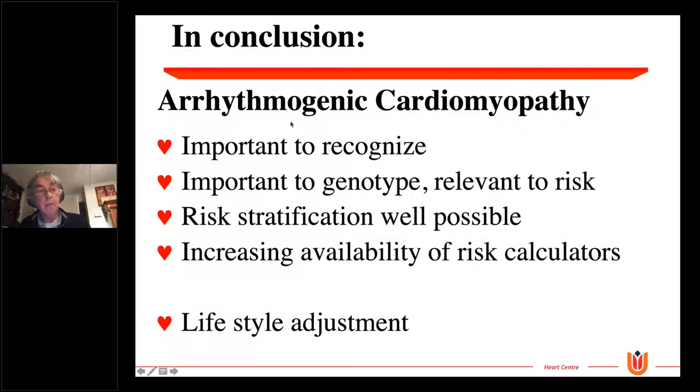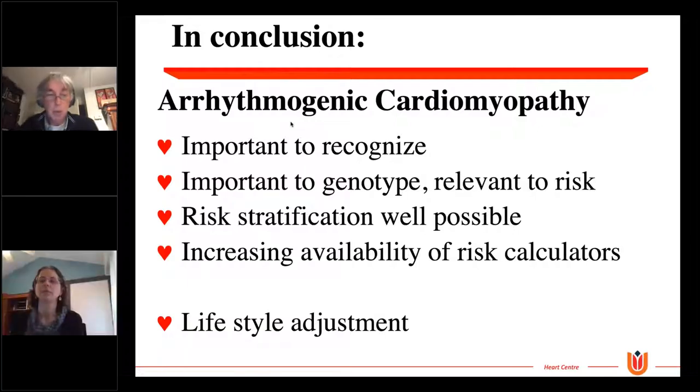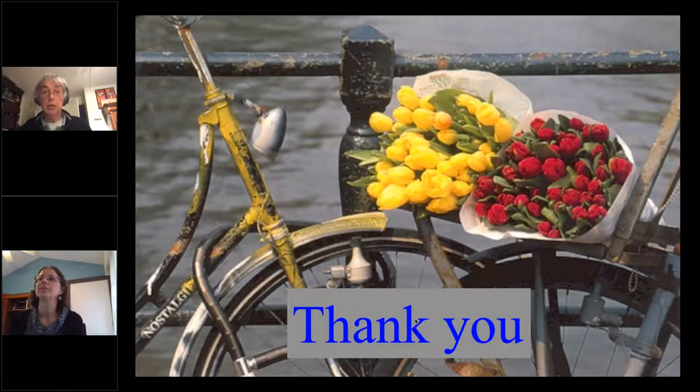So, in summary, arrhythmogenic cardiomyopathy is very important to recognize. It is important to genotype, and Cynthia will discuss the details in a minute, because it's relevant to risk, as I have shown. Risk stratification is well possible. I've also shown that. And there is an increasing availability of risk calculators in these diseases, but are present only for ARVC. And there are definitely some lifestyle adjustments pertinent, but they also will be discussed by Cynthia. Thank you very much for your attention.